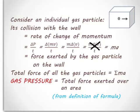And it's equal to force exerted by the gas particle on the wall. Total force of all the gas particles is equal to the summation of all MAs. So gas pressure is equal to total force exerted over an area. In other words, F over A, from the definition of formula.